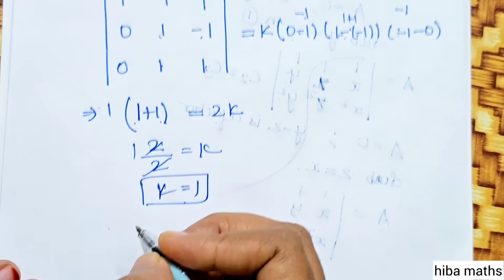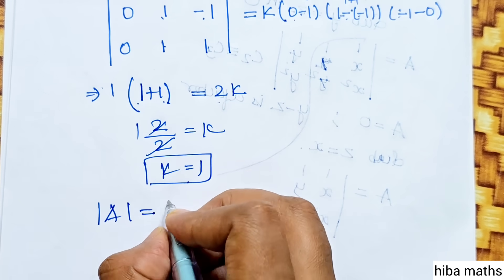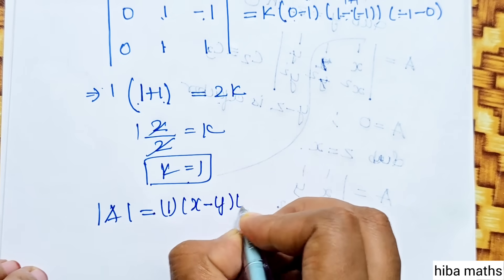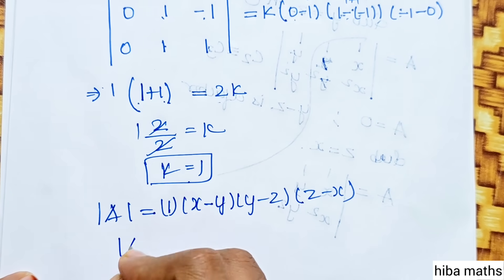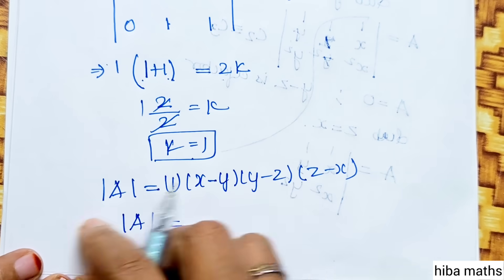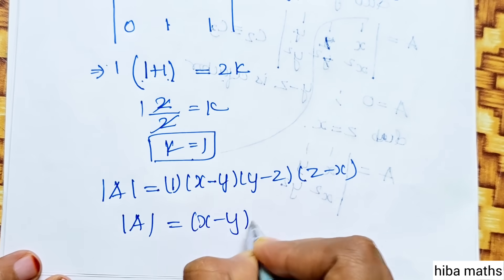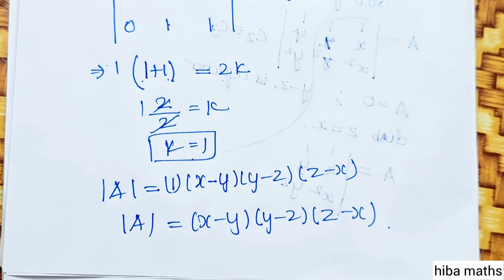Now k value equals 1, so k into the factors gives 1 into x minus y, y minus z, z minus x. Therefore, filling the matrix fully, the determinant equals x minus y, y minus z, and z minus x. I hope you understand. Please leave any doubts in the comment section. Thank you so much for watching.